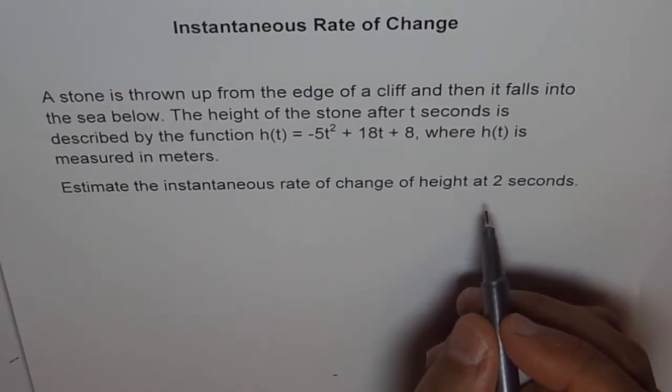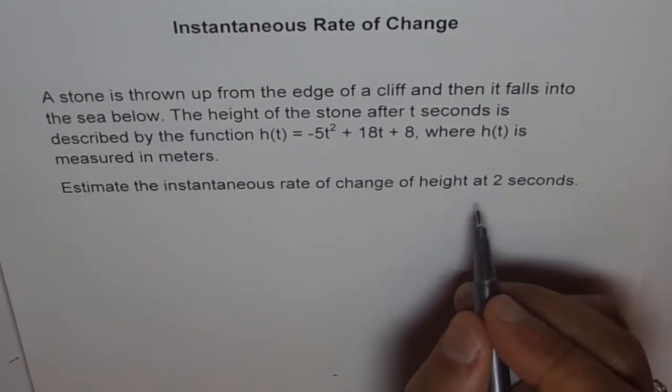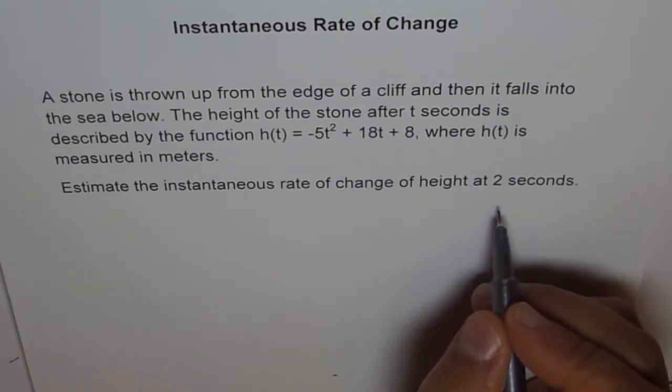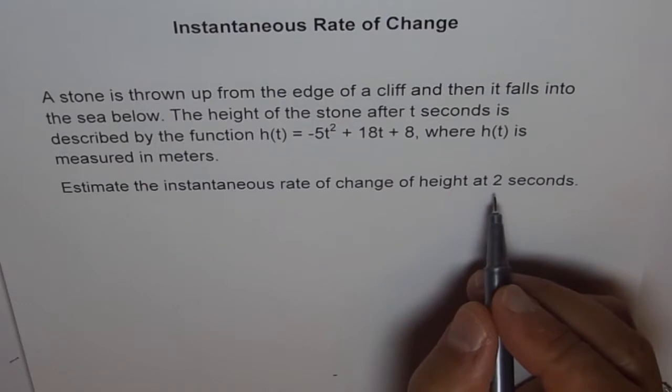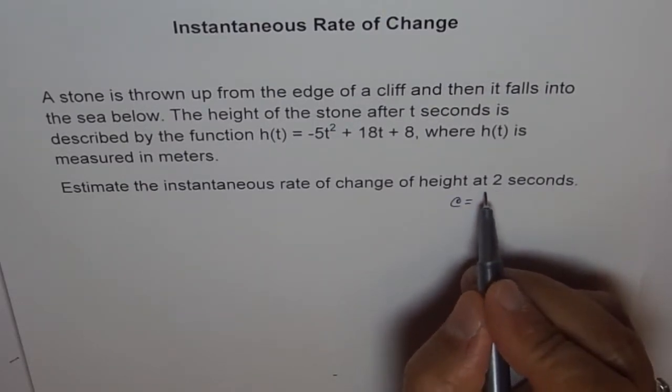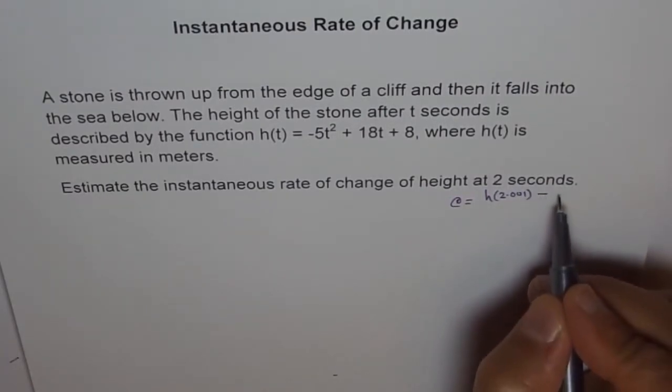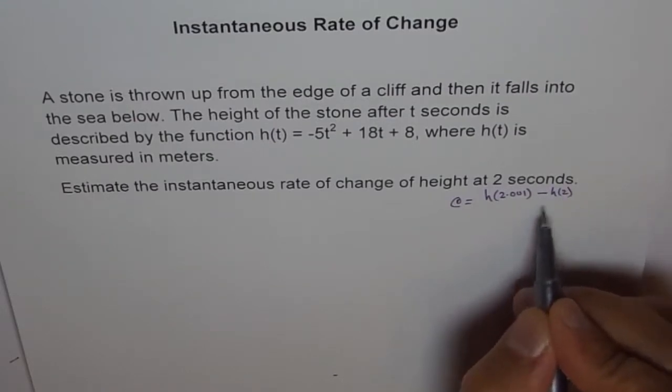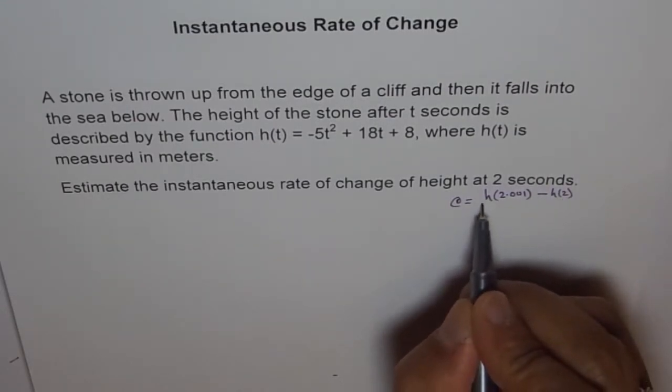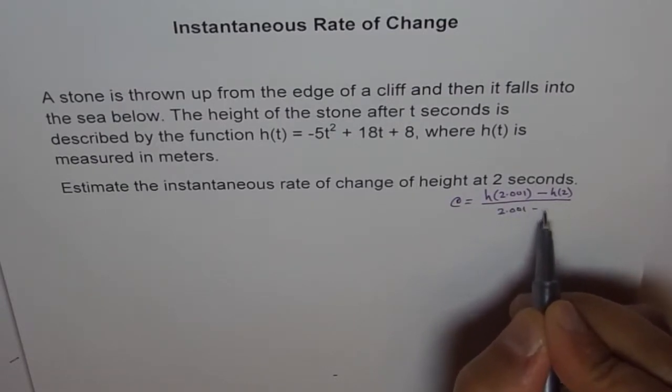So, in that case, what we do is, there is one method and let me just write down this method on this side because I am going to use a different method to solve this. So, the instantaneous rate of change is equal to h of, let's say, 2.001, you can use calculator to find this, minus h of 2. Because this is the point of interest over 2.001 minus 2.